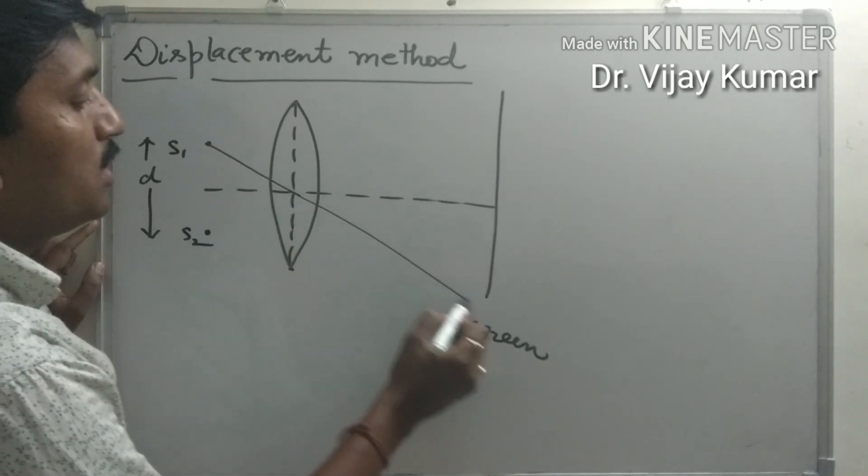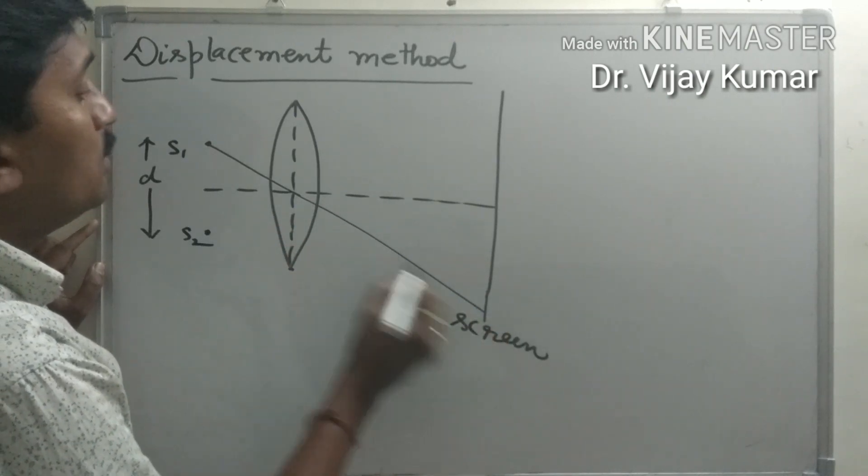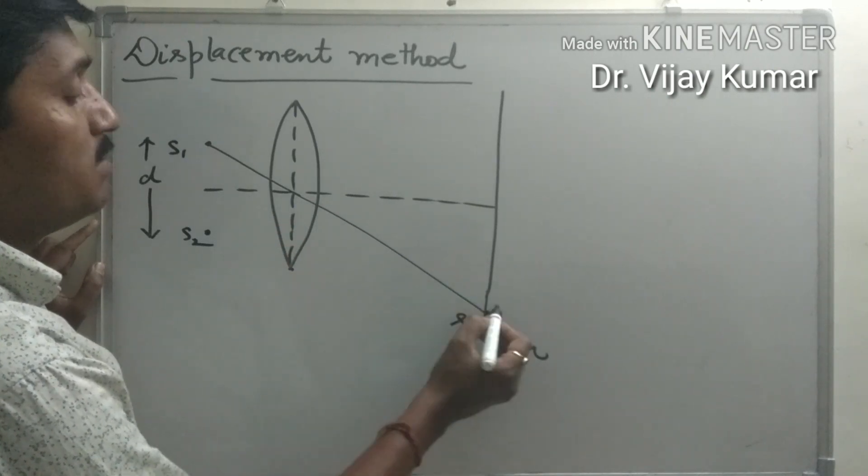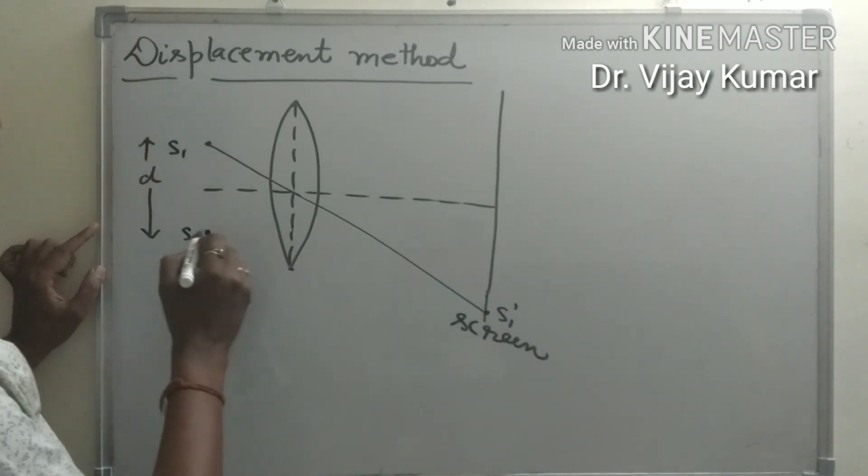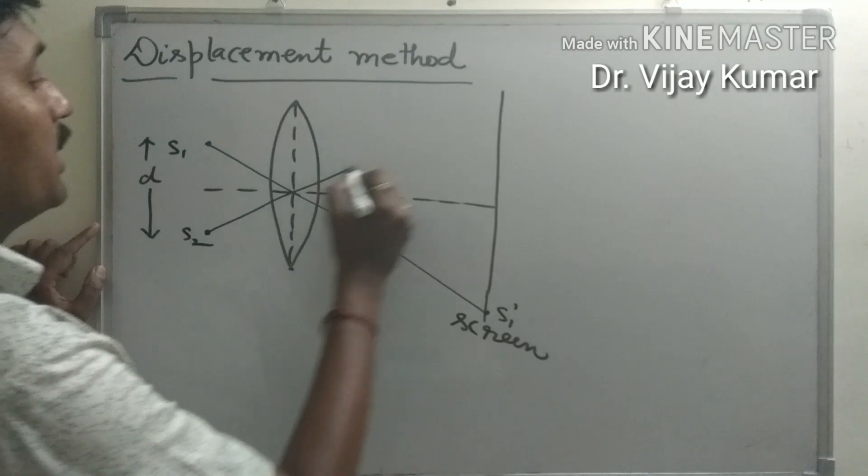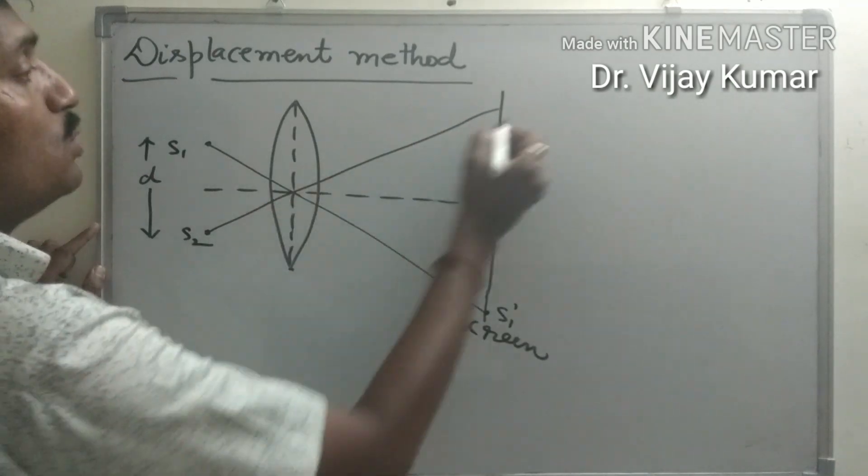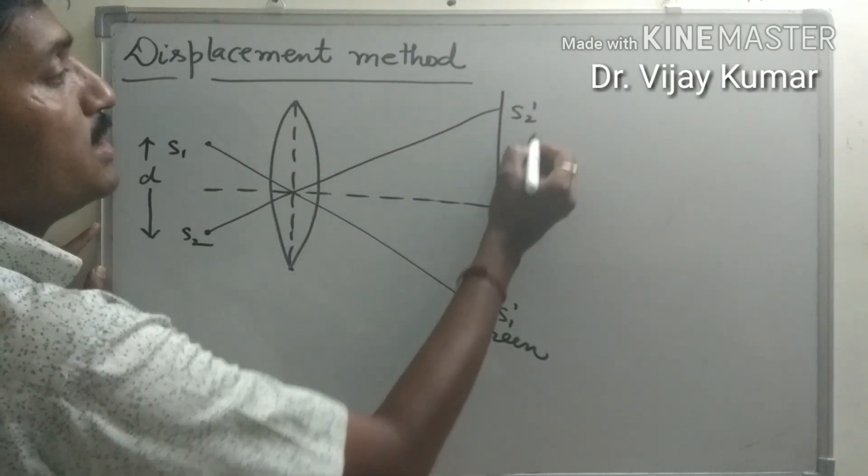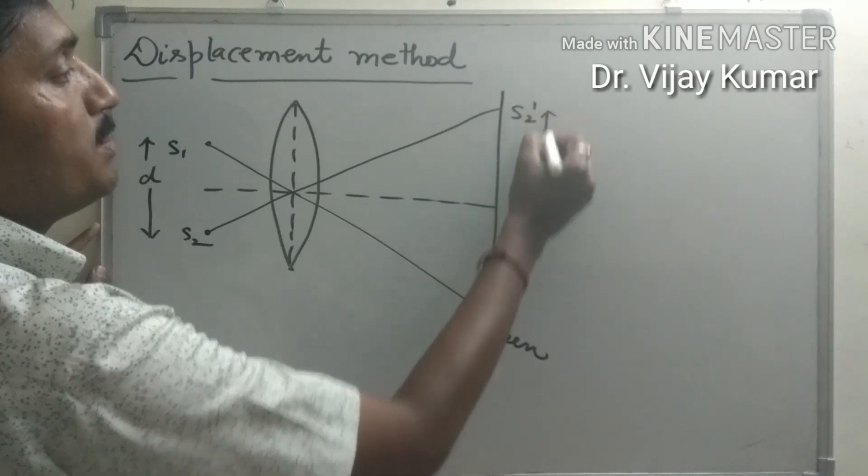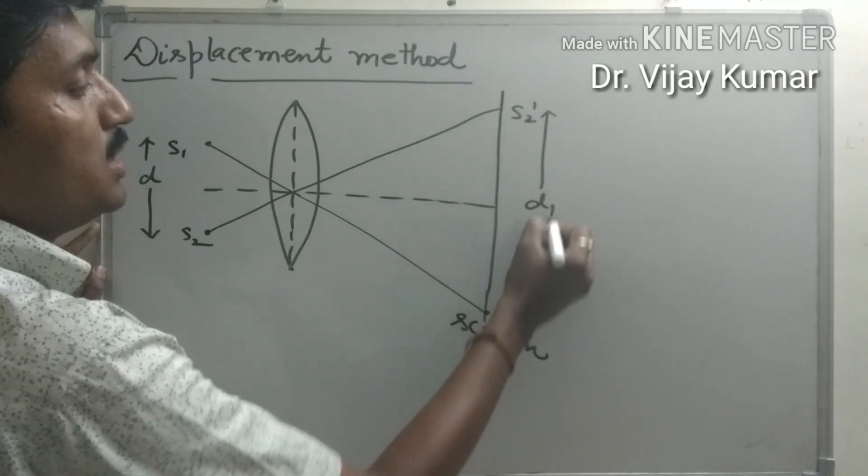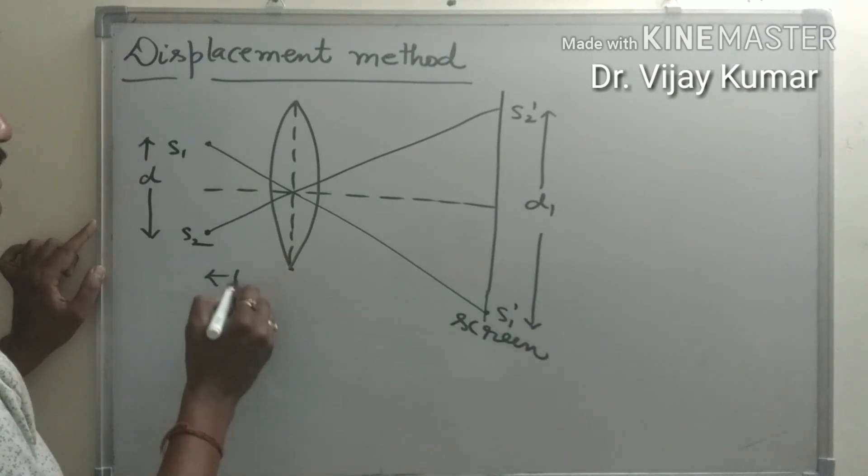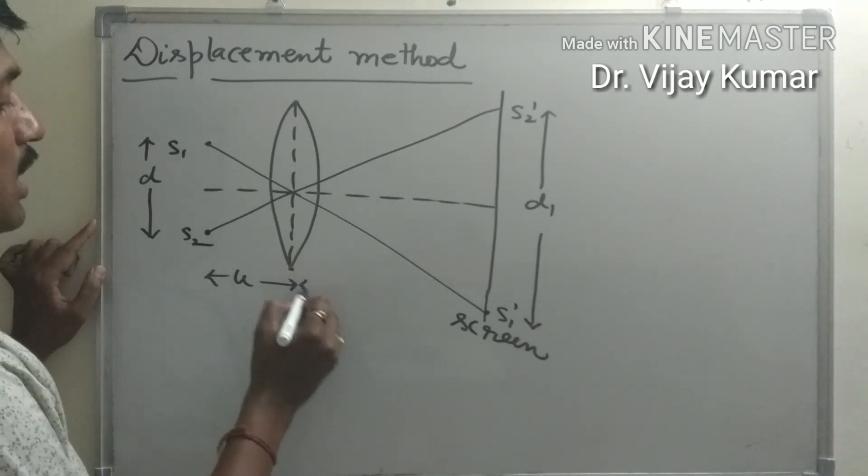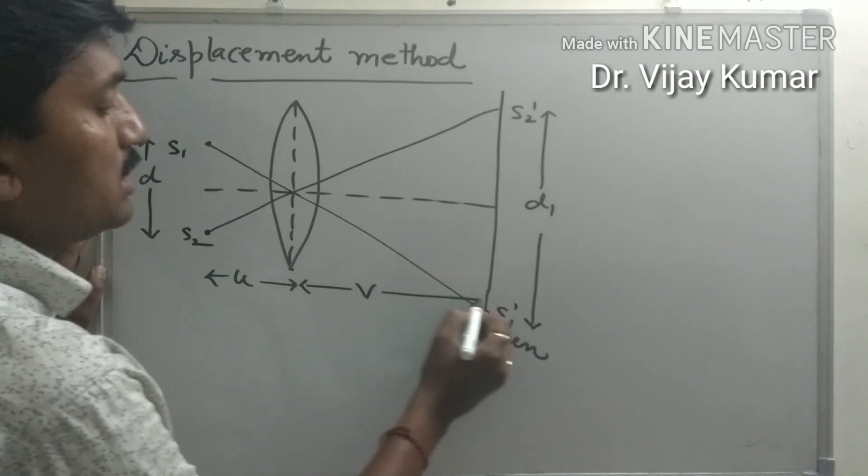passes through the optical center of the lens and the image becomes at S1 dash. Another light ray from S2 source again passes through the optical center and the image of S2 becomes at S2 dash. The separation between these two images is d1, this distance is u, and this distance is small v.